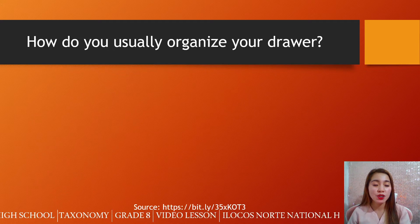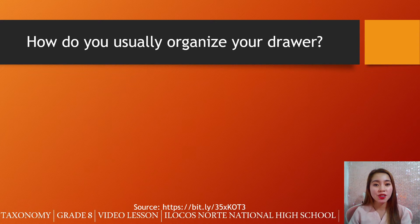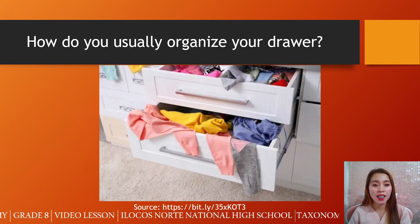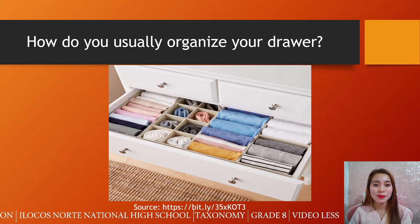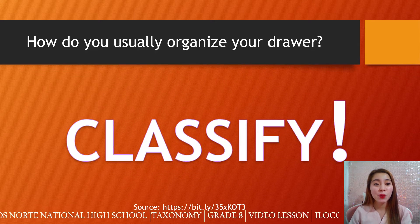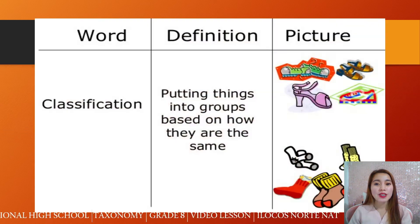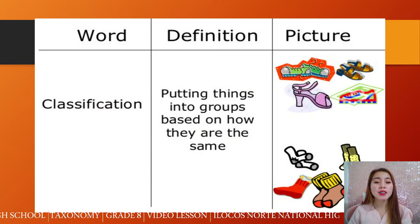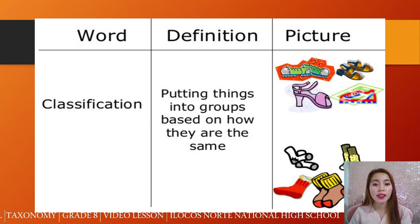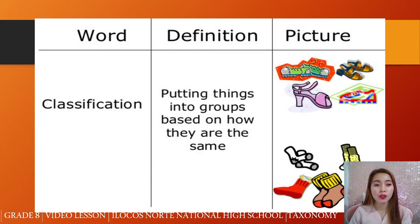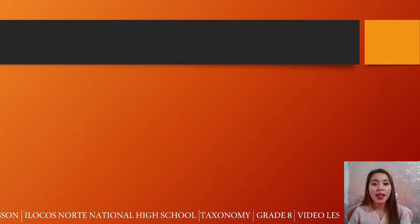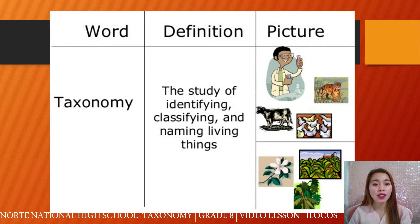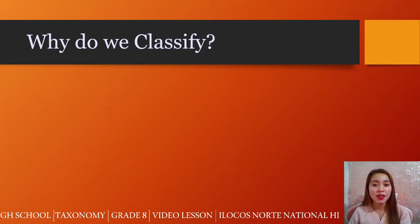Before going to the taxonomical hierarchy, I want you to answer this question: how do you usually organize your drawer? We need to classify. Classifying or classification is putting things into groups based on how they are the same. For example, all shoes in one place, all socks, all shirts. And in taxonomy, taxonomy is the study of identifying, classifying, and naming living things.